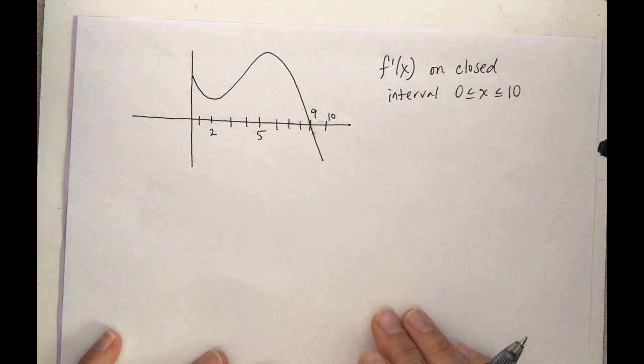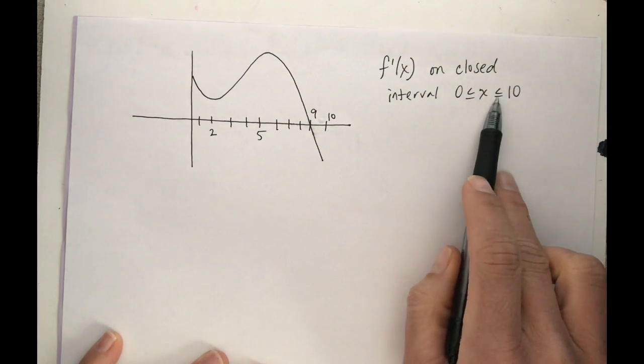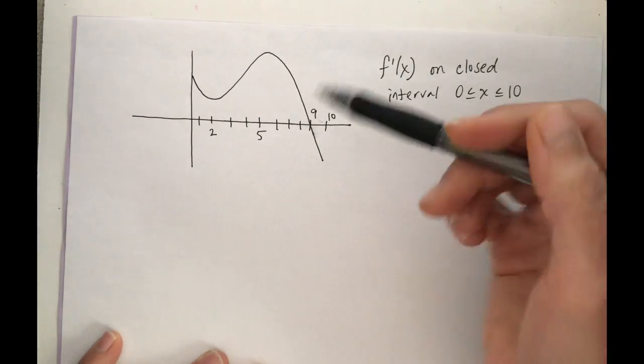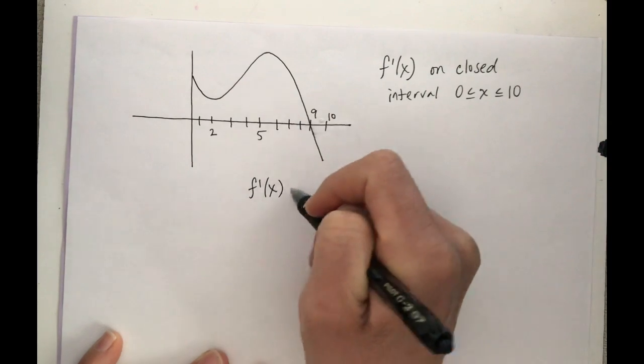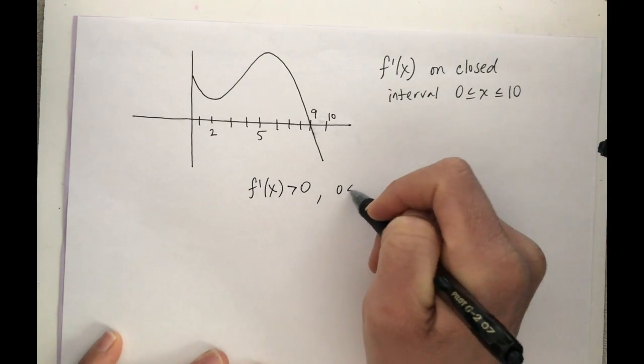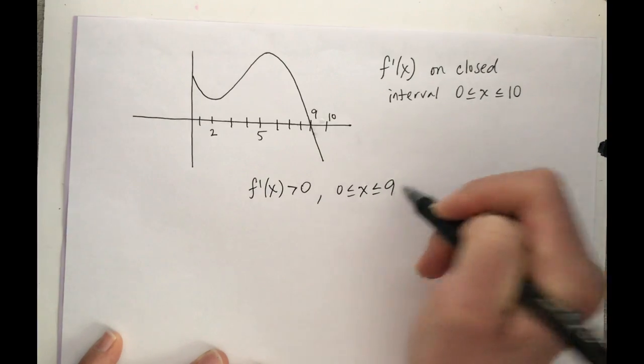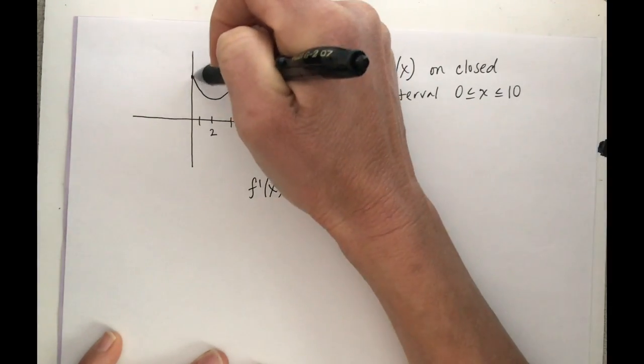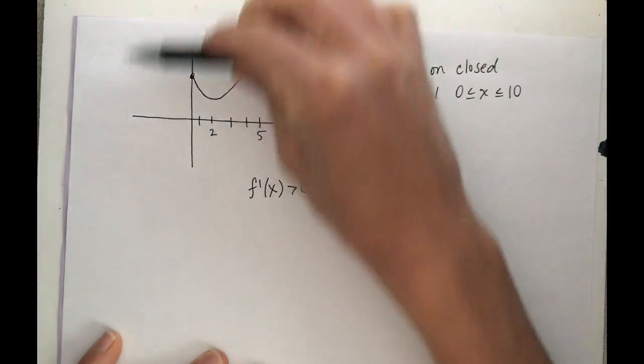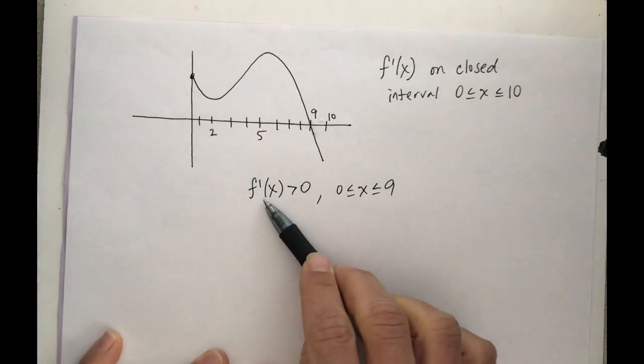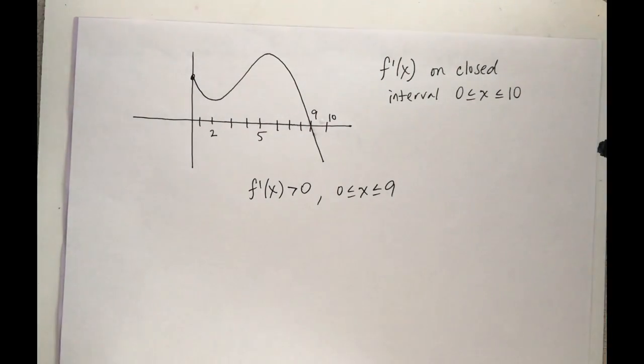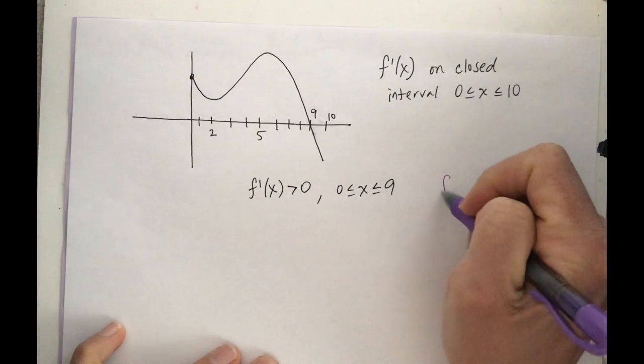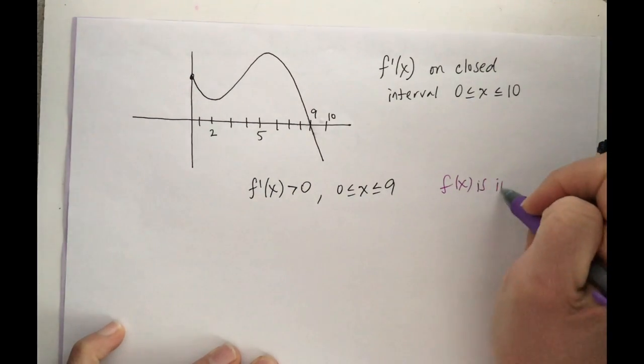All right, good practice there algebraically. Now let's move graphically. We've got f'(x) on a closed interval from 0 to 10. So this is the graph of the derivative. According to this, I'm gonna say f'(x) is positive for all 0 ≤ x ≤ 9 because my derivative, this graph of the derivative, is all above the x-axis. So f'(x) is positive over this interval. So therefore, f(x) is increasing.